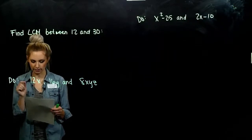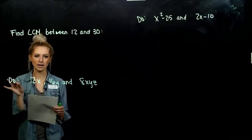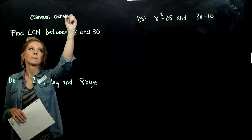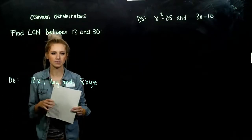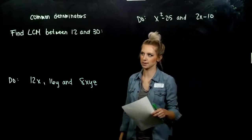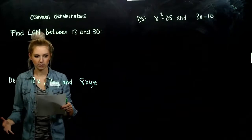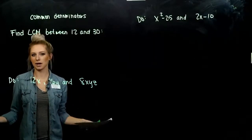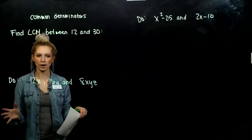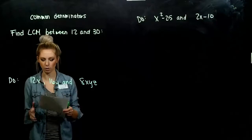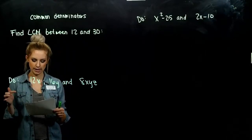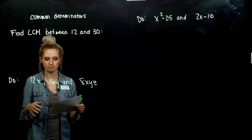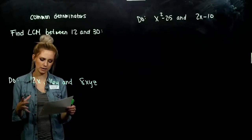To be able to add fractions — or subtract — we need common denominators. We need to have the same amount of division in order to combine them. We need the smallest common denominator, or the least common denominator, to work with. We could use any common denominator, but if we pick the smallest one, it requires the least amount of work. We won't have to simplify as much. The book's way is to use each factor the greatest number of times it appears in any one factorization.